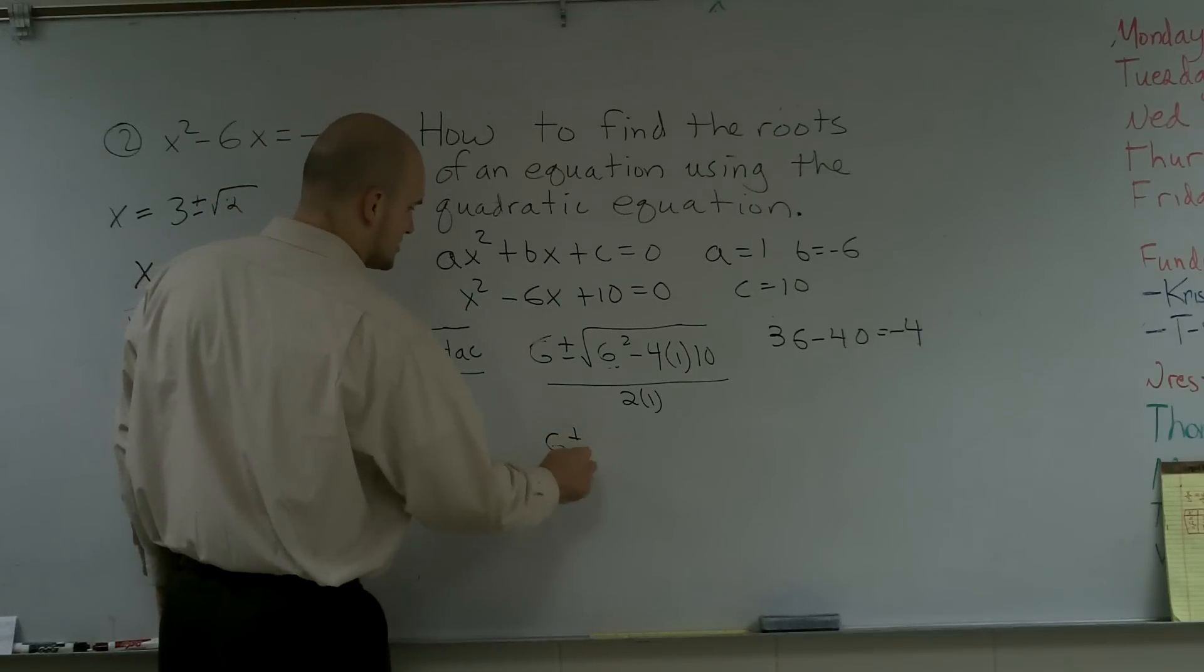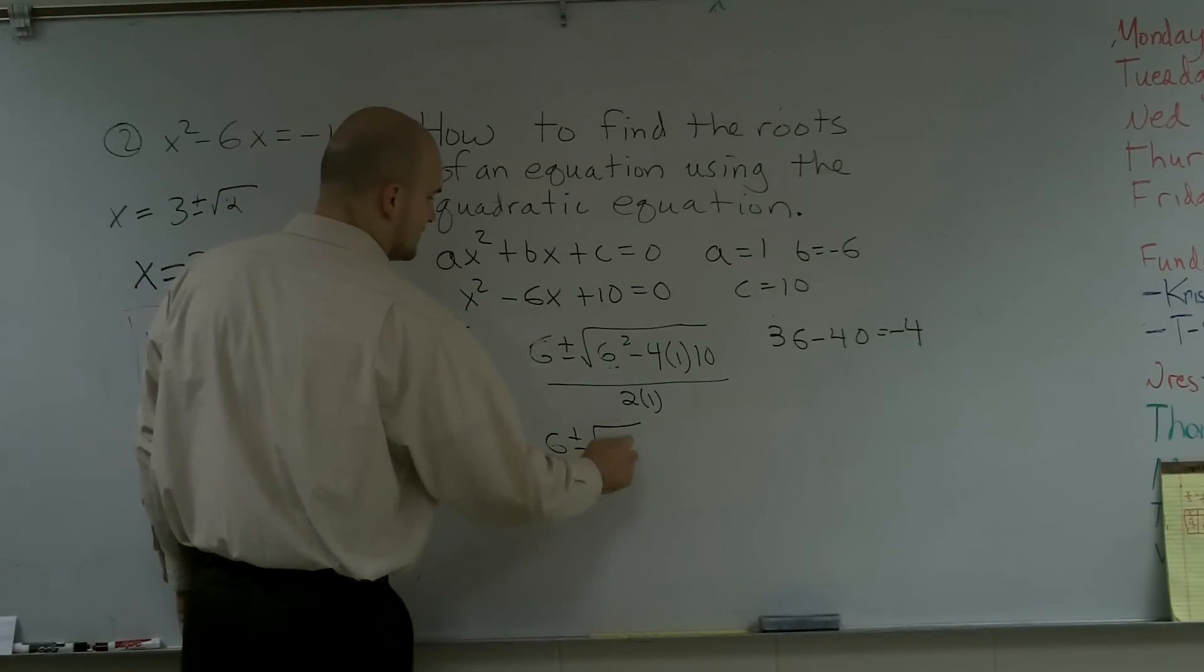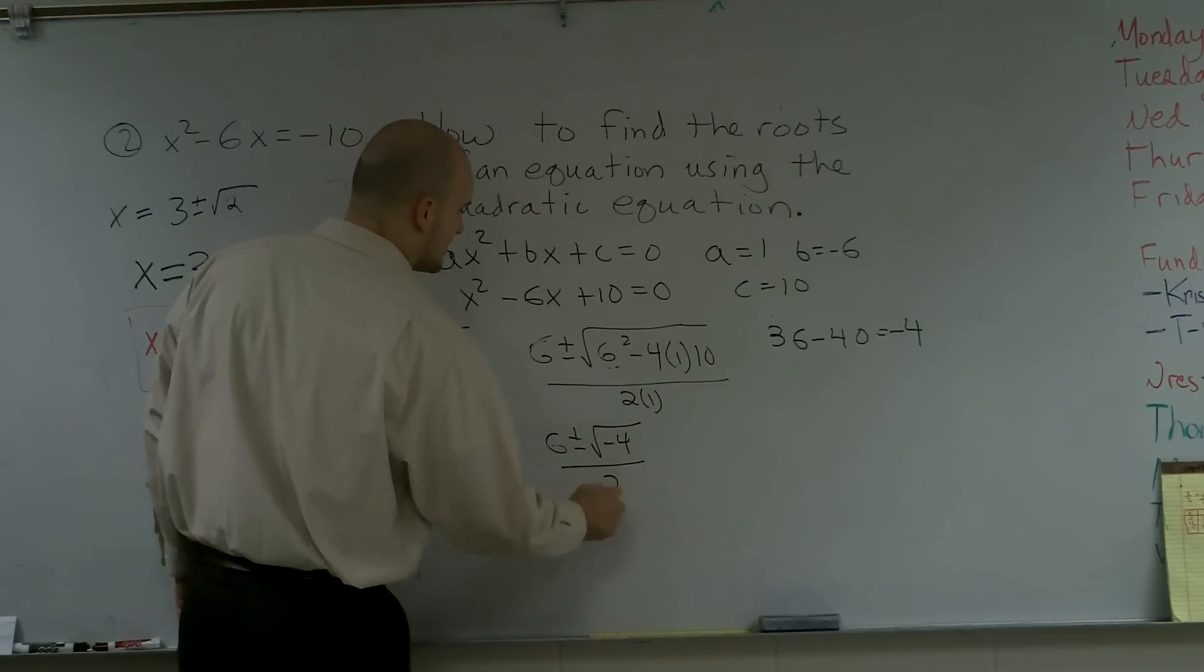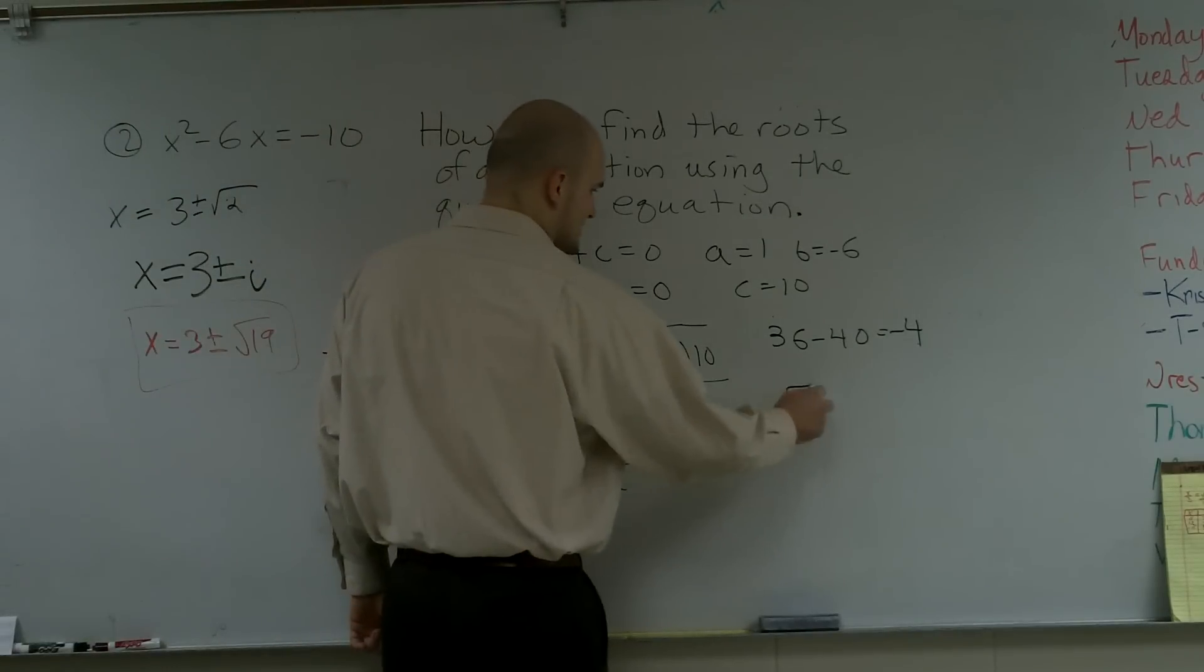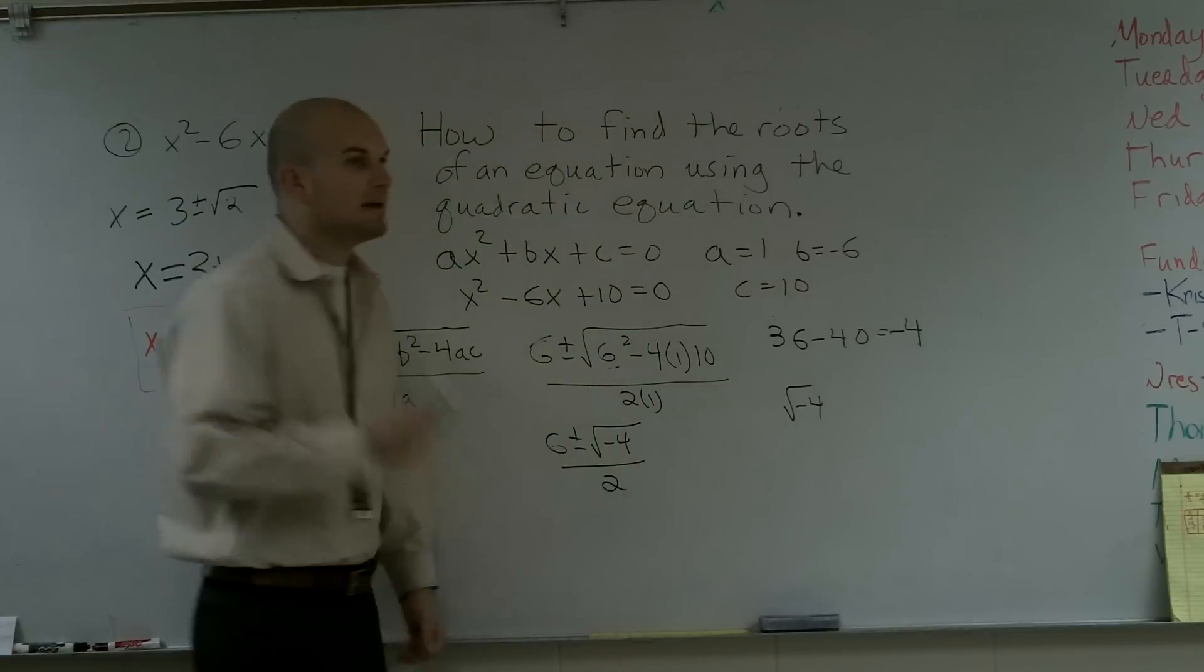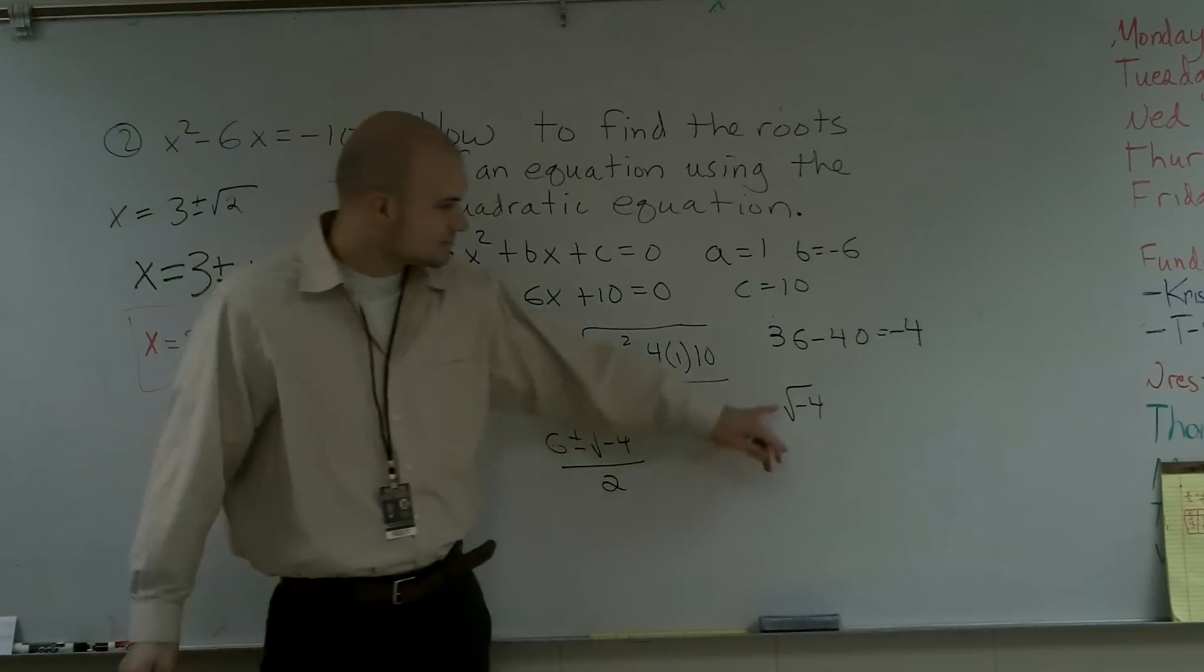So, therefore, I translate this down to 6 plus or minus the square root of negative 4 divided by 2. Now, to simplify the square root of negative 4, I'm going to again do this on the side. We've got to remember about our i in complex numbers.